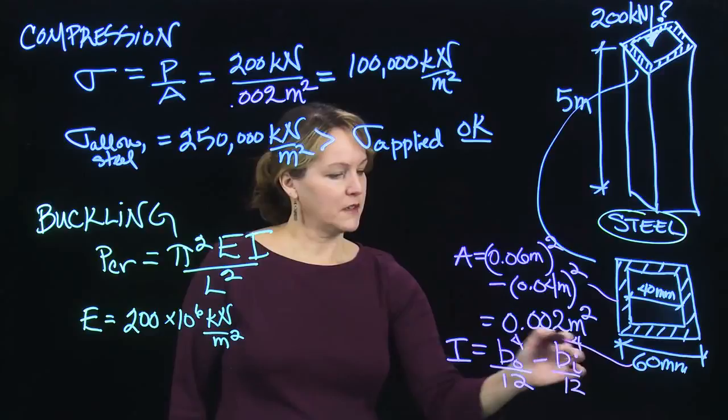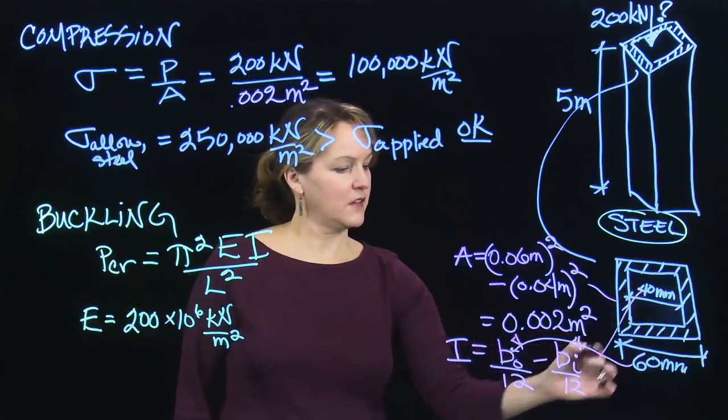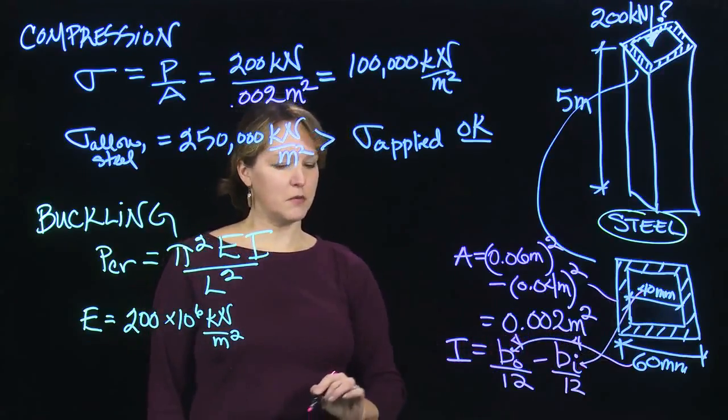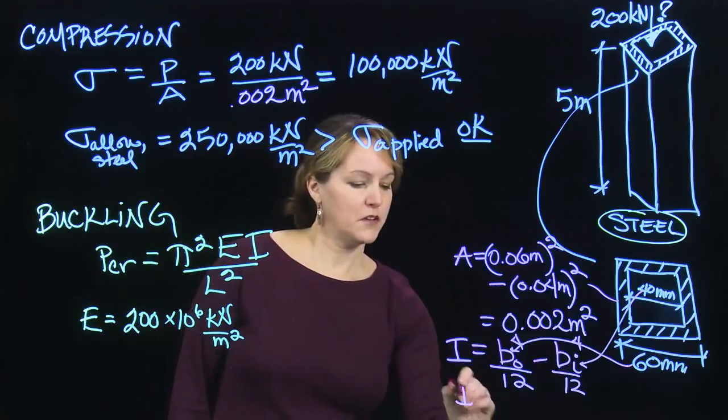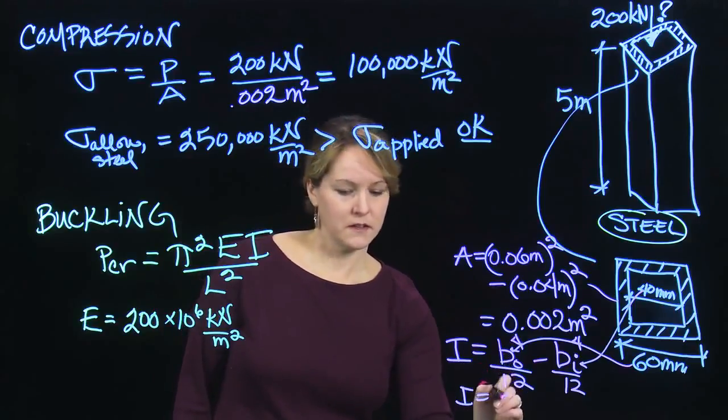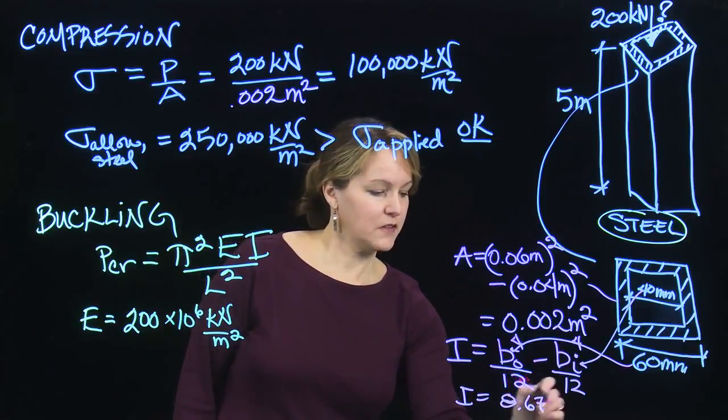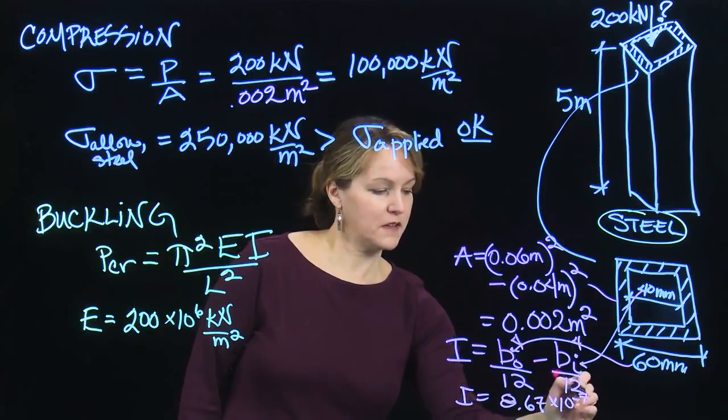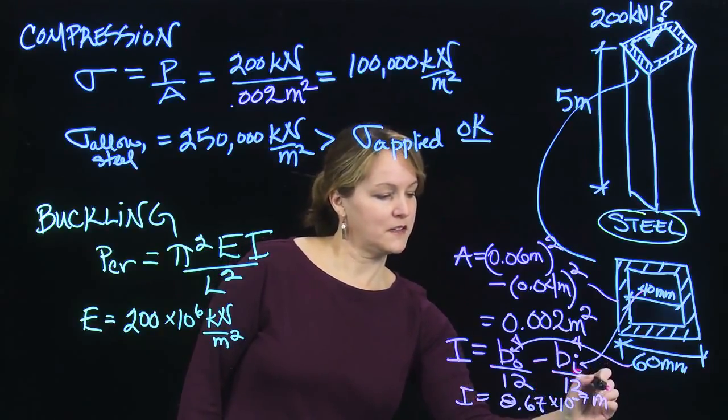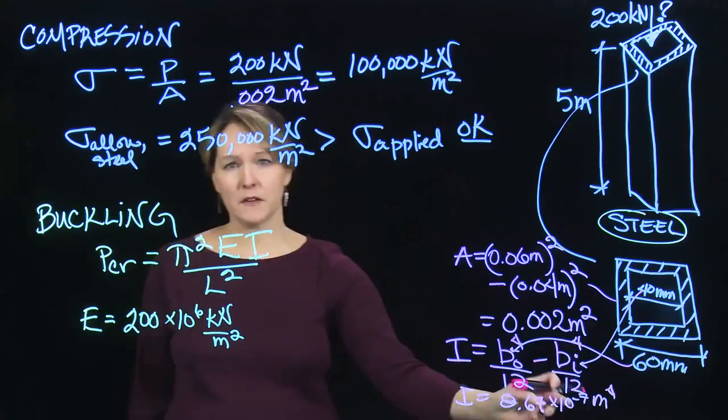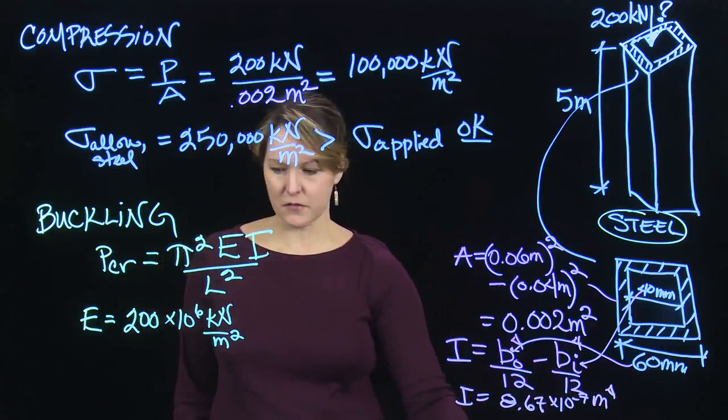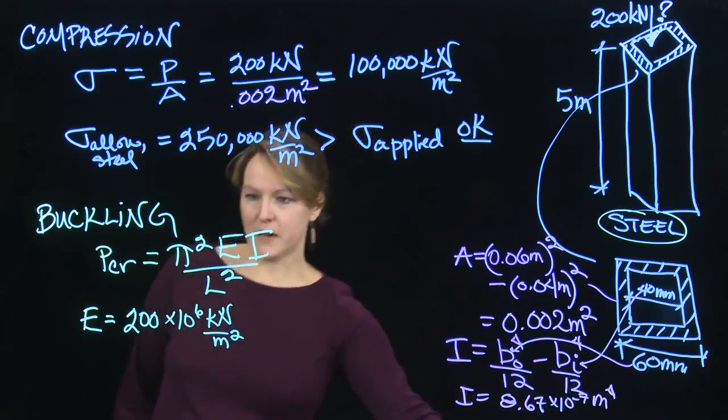So in this case, I would put 60 in and the 40 in, and I can calculate that moment of inertia, and that moment of inertia ends up being 8.67 times 10 to the minus seventh meters to the fourth. Moment of inertia will always be raised to the fourth, the length to the fourth. So that can go into my equation.